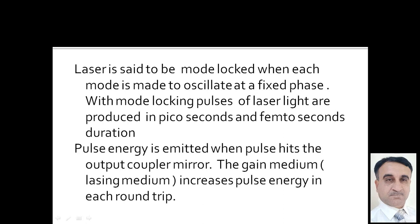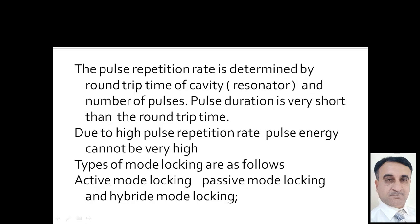Pulse energy is emitted when a pulse hits the output coupler mirror. The gain medium or lasing medium increases pulse energy in each round trip, as light waves make different round trips between the mirrors. The pulse repetition rate is determined by the round trip time of the cavity and the number of pulses. Pulse duration is very short compared to the round trip time. Due to the high pulse repetition rate, pulse energy cannot be very high.